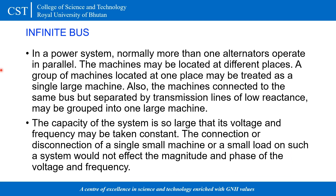In a power system, it is not possible to serve all consumers with a single alternator or generator. To meet the demand of consumers, many alternators are connected to a single bus. When many alternators are connected to a single bus, it acts like a single large machine with high capacity. When there is high capacity, the voltage and the frequency are taken as constant.